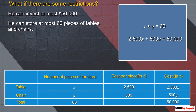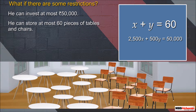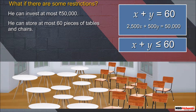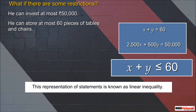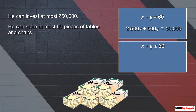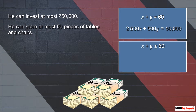What if there are some restrictions? For example, the businessman can invest at most 50,000 rupees and can store at most 60 pieces of tables and chairs. Since he can store at most 60 pieces, he can store either 60 or fewer pieces of furniture, so the equation becomes: x + y ≤ 60. This representation using inequality is known as a linear inequality. Similarly, since he can invest at most 50,000 rupees, the equation becomes: 2,500x + 500y ≤ 50,000.